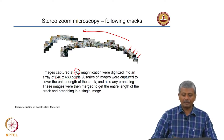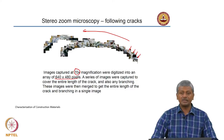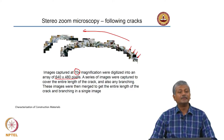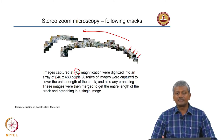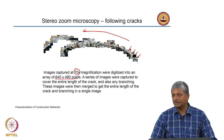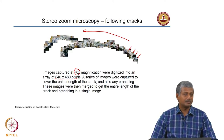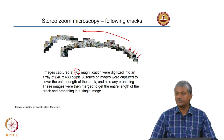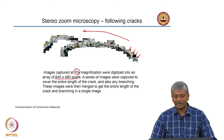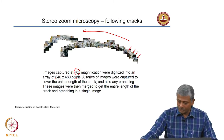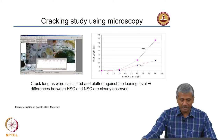Let us see what crack parameters were actually measured in this case. The most obvious measurement is the length of the crack. You can also measure approximate crack width at certain locations. That is what was actually done in this case.